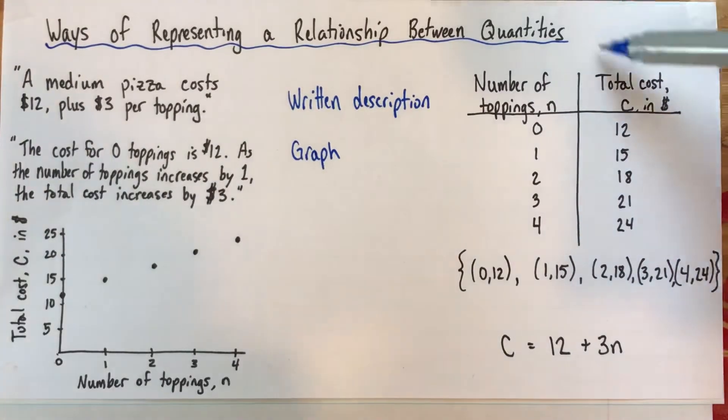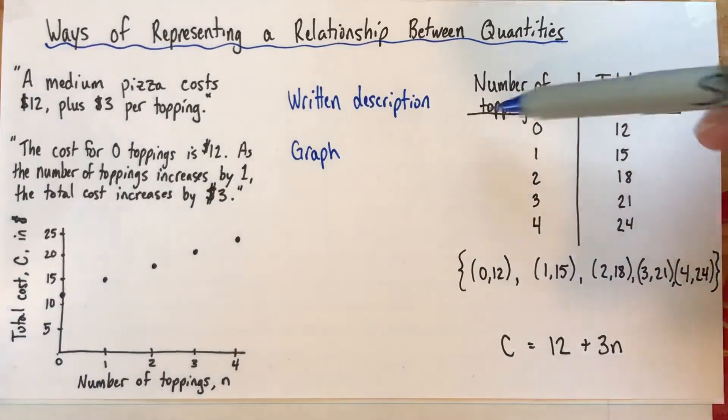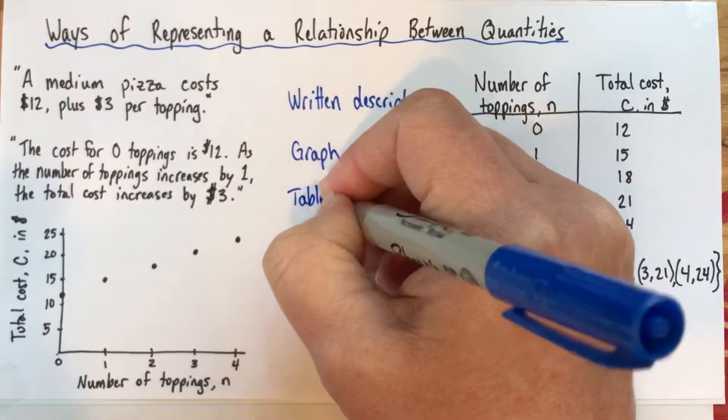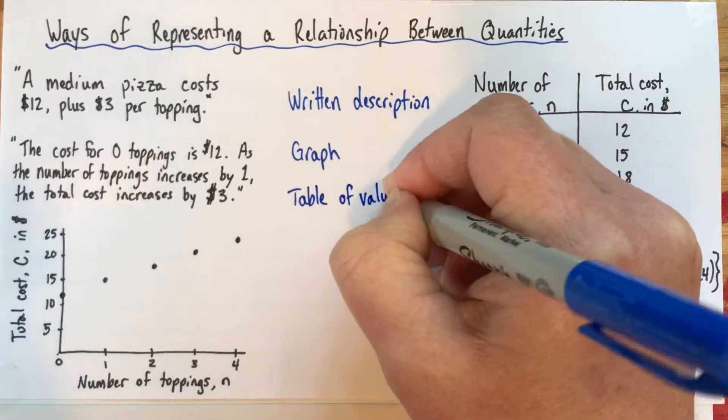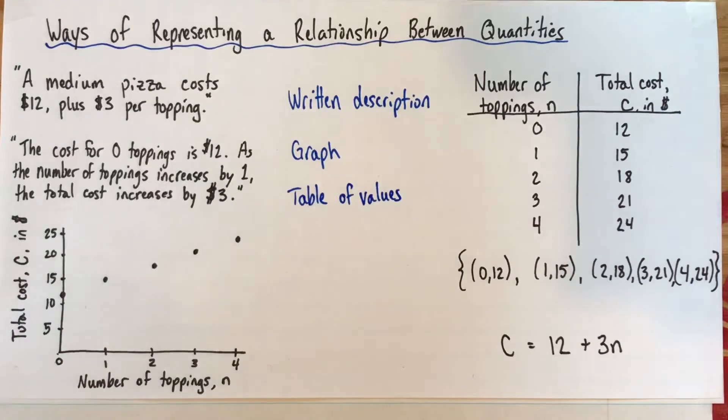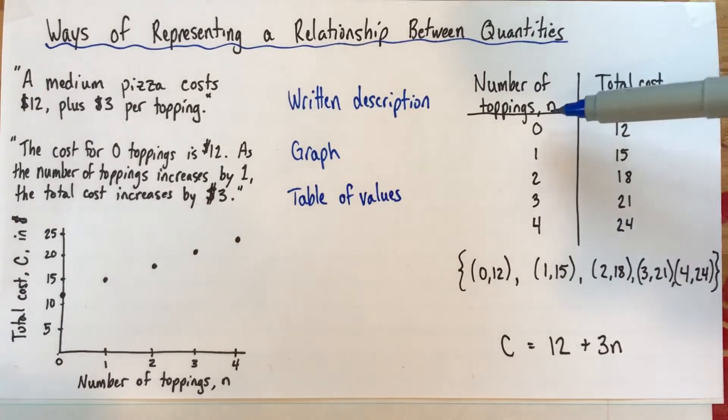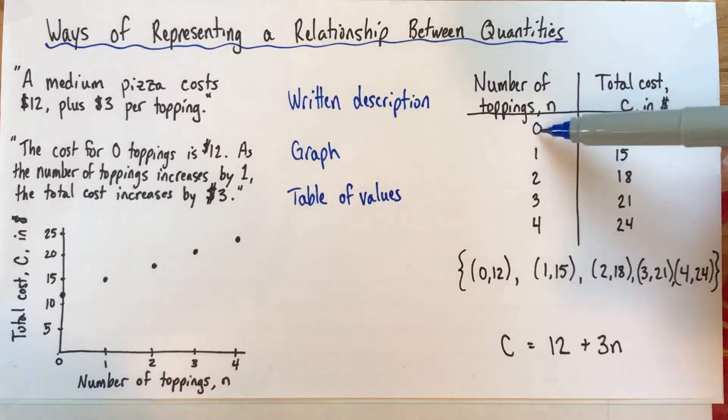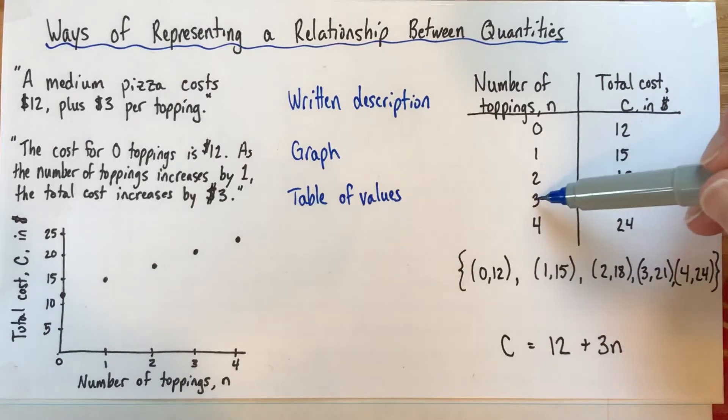Over here, here's another method and this is the table of values and sometimes people just call it a table and sometimes people call it a T-table or a chart. But what it is, there's two titles, the number of toppings which we call n and the total cost and then the number here for zero toppings it goes with that number there for $12. So it shows the relationship with different examples here. For example, three toppings cost $21.